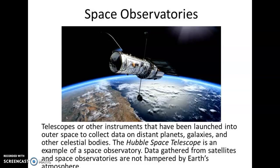Space observatories are telescopes or other instruments that have been launched into outer space to collect data on distant planets, galaxies, and other celestial bodies. The Hubble Space Telescope is an example of a space observatory. Data gathered from satellites and space observatories are not hampered by Earth's atmosphere — that's a key point.